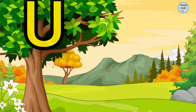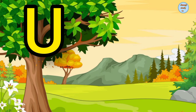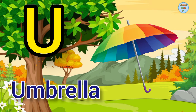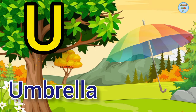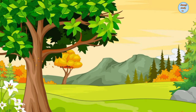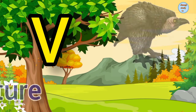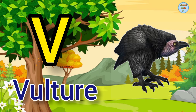U. U for umbrella, umbrella means chata. V. V for vulture, vulture means gidh.